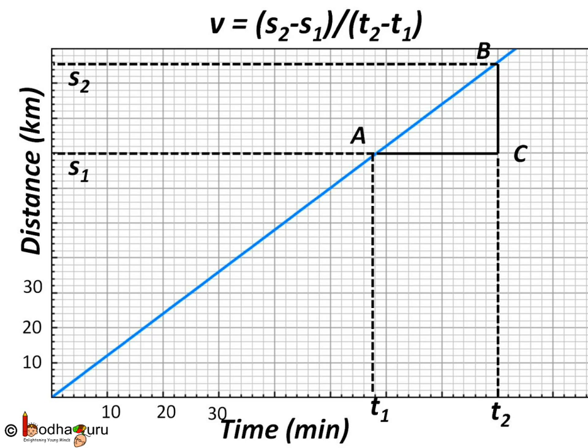We can also find speed from this graph. Consider a small part of the graph AB. Draw a line parallel to x-axis from point A and another line parallel to y-axis from point B. These two lines meet each other at point C to form a triangle ABC. So now on the graph AC denotes the time interval t2 minus t1 between these two points. While BC corresponds to the distance covered in that time interval that is s2 minus s1. So speed between these two points is equal to distance by time that is equal to s2 minus s1 by t2 minus t1.